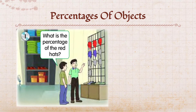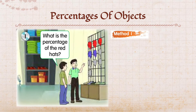We will solve this question using two methods. Dua cara untuk selesaikan soalan ini. Method one. Cara pertama. First, we write the fraction for red head. Kita tulis pecahan untuk topi yang berwarna merah.